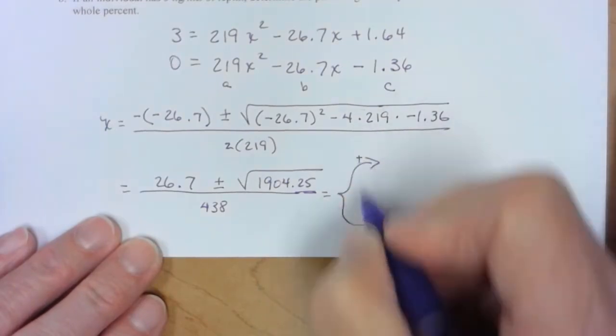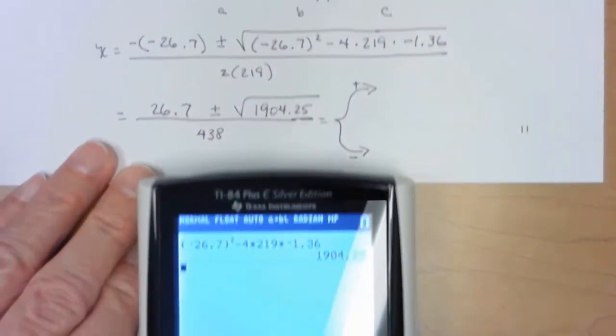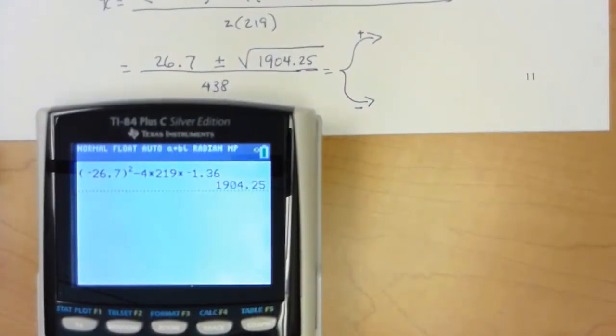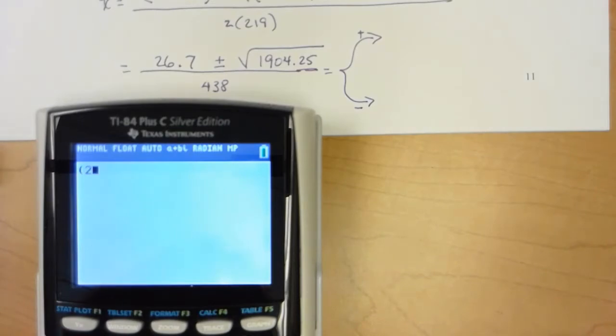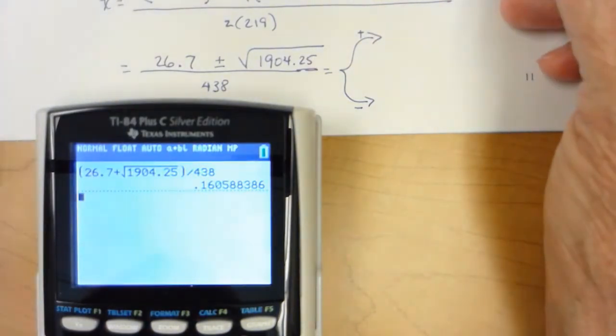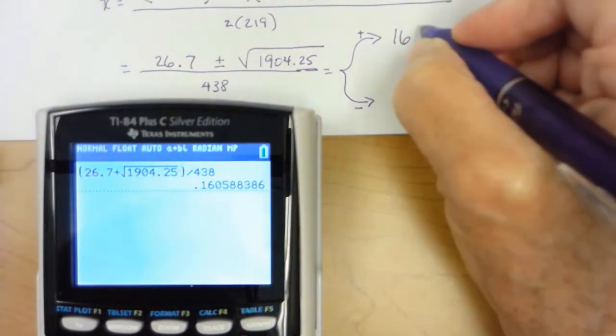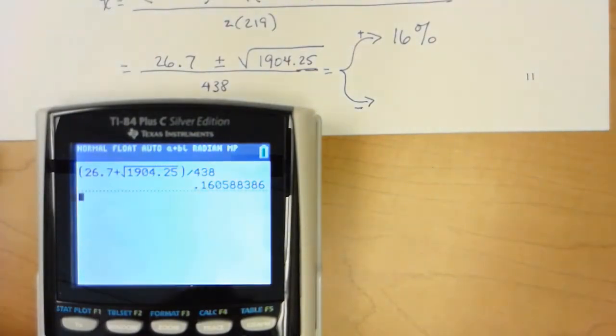So let me go with the plus route, minus route, see what we come up with. Whoops, hit my camera. Let's clear this off. Because the numerator is a binomial, I need parentheses. So 26.7 plus second square root 1904.25, divide by 438. And it says to round to the nearest whole percent. So if I tap to change that to percent, it would be 16, so I go 16 percent. So let me do second enter.